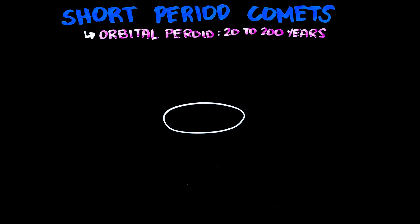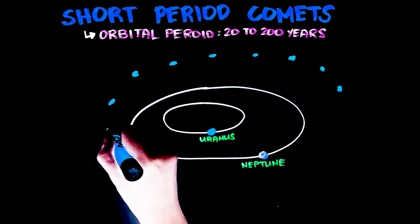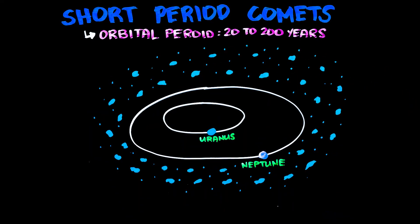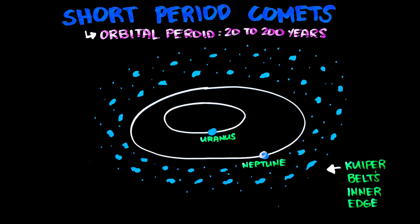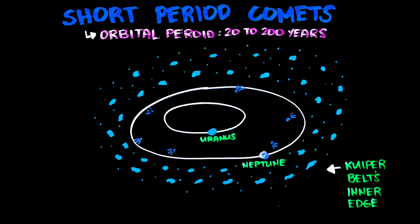It has two groups: the Jupiter-type comets and the Halley-type comets. Jupiter-type comets come from the Kuiper Belt's inner edge and are affected by the gravitational forces from Neptune or Uranus, occasionally causing them to be flung and get caught up in orbits.